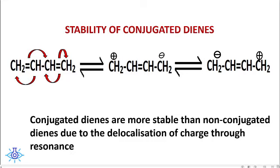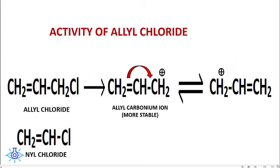Now let us apply the mesomeric effect to understand the activity of allyl chloride. Allyl chloride is CH₂=CH-CH₂Cl and vinyl chloride is CH₂=CHCl. Allyl chloride is more active than vinyl chloride because the allyl carbonium ion, formed after release of Cl⁻, is more stable than the vinyl carbonium ion due to resonance stabilization.